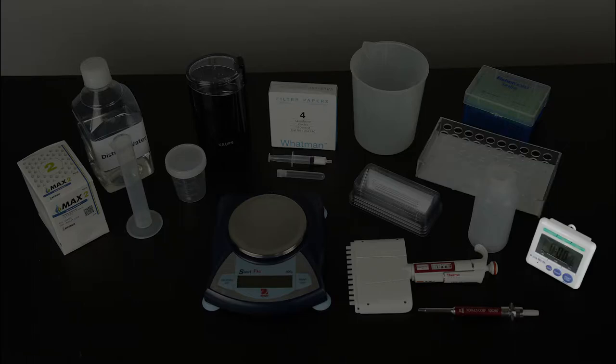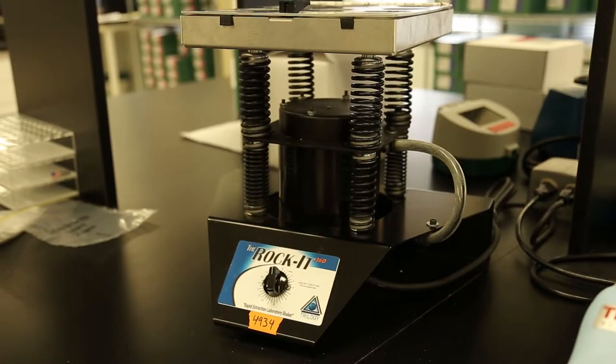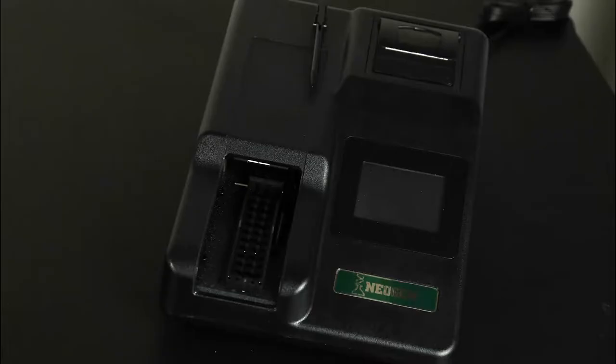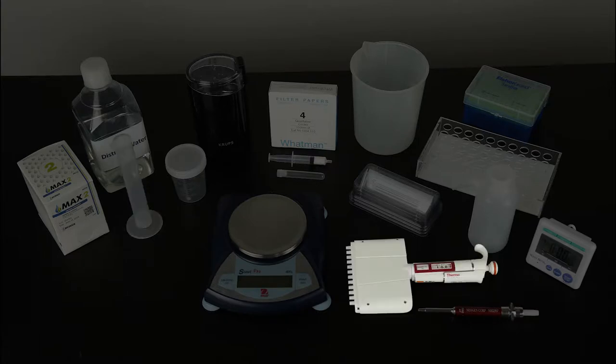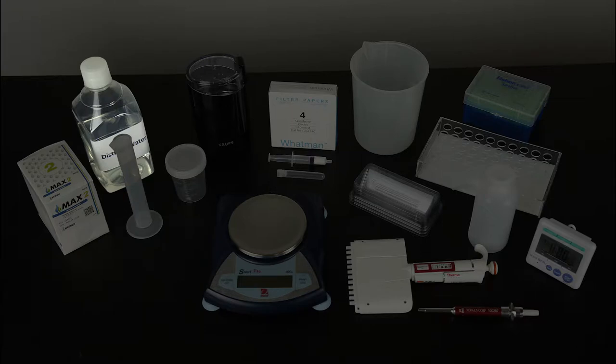You will also need a tube rack, timer, rocker shaker, microwell reader with a 650 nanometer filter, 50 milliliter graduated cylinder, 12 channel pipetter and tips, 100 microliter pipetter and tips, wash bottle, reagent boats, distilled or deionized water, and Max 2 aqueous extraction packets.